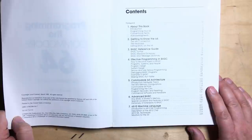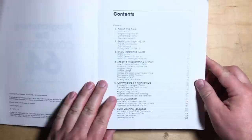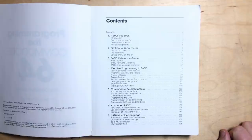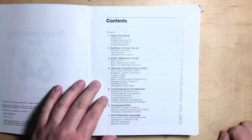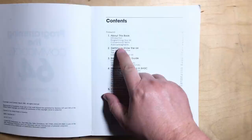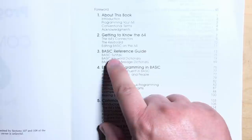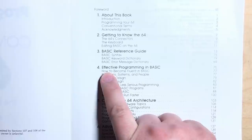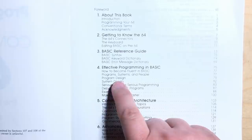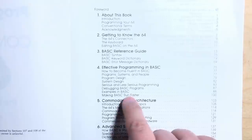So I highly recommend that you get this book. Okay, so let's take a look through the table of contents and then I'll just give you some highlights on this book. This is a book you could read every day for like a month and be learning so much new every day and then have to come back to it again. Just an introduction about the book, getting to know the 64, and it shows the various connectors, the keyboard, and how to edit in basic. Then there's a thorough basic reference guide which shows the syntax, all the keywords, and all the error messages. Then another section on basic, effective programming in basic. How to become fluent in basic, program systems and people, program design, system design, serious and less serious programming, debugging basic, and making basic run faster.